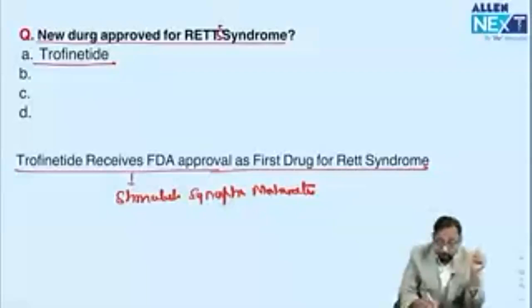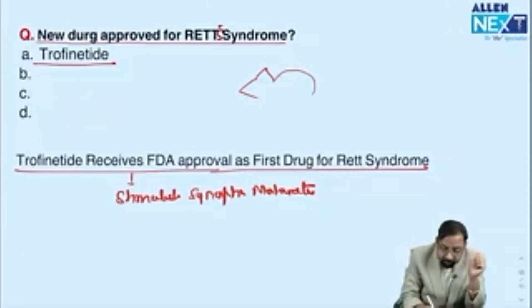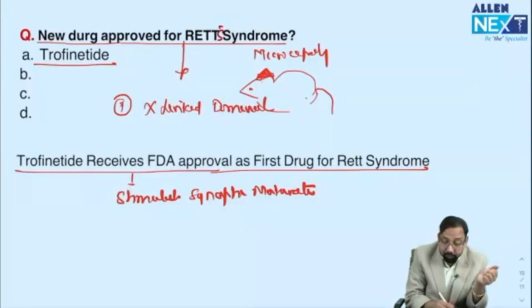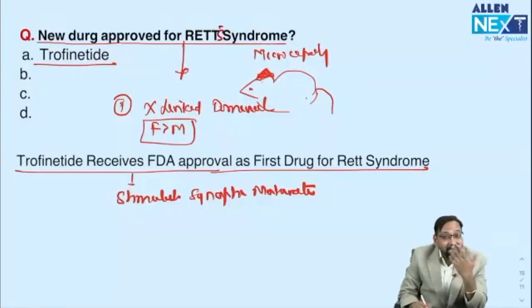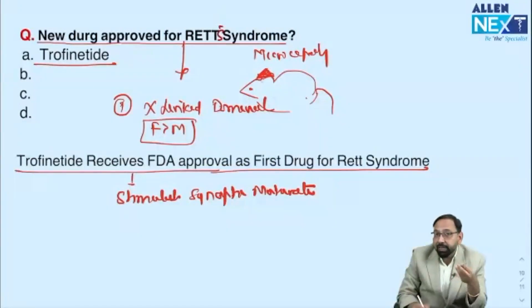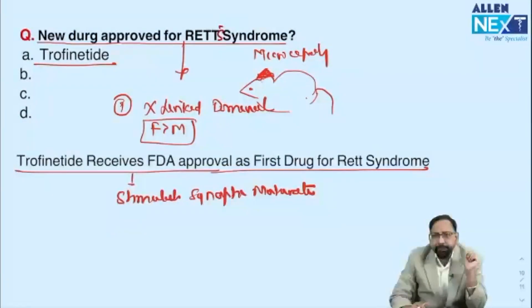Rett syndrome is a repeat topic. A question was asked that Rett syndrome presents with microcephaly — a very small head. In the 2023 NEET exam, it was asked that Rett syndrome is X-linked dominant and is exclusively found in females. However, recently a few male patients with Rett syndrome have been reported, so now we say it is more common in females rather than exclusively female.